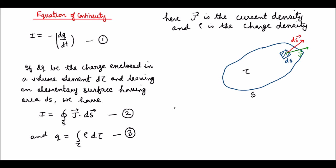Now from equations one and two, we have J dot dS integrated over the whole surface S is equal to minus dQ/dt. And also from equation three we can write it as...